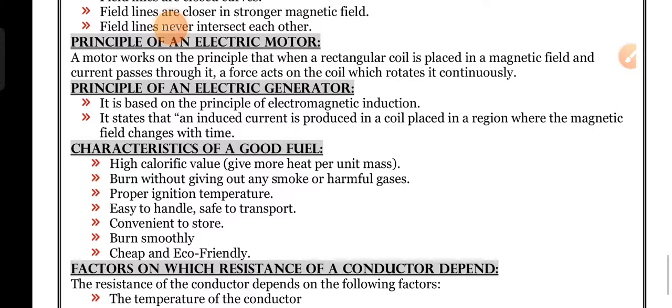Principle of an electric generator: It is based on the principle of electromagnetic induction. It states that an induced current is produced in a coil placed in a region where the magnetic field changes with time.